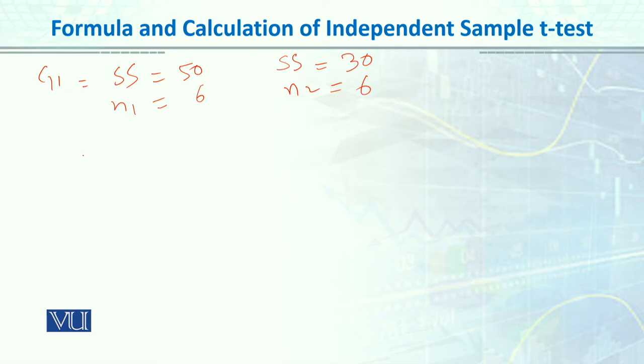The information given was SS for group 1 equals 50, and n1 equals 6. For group 2, SS equals 30 and n2 equals 6. To calculate variance, we use SS over degrees of freedom. For better unbiased estimation, we use degrees of freedom. So variance equals 50 divided by (6 minus 1) which is 5, giving us 10. For the other group, variance equals 30 divided by 5, which equals 6.